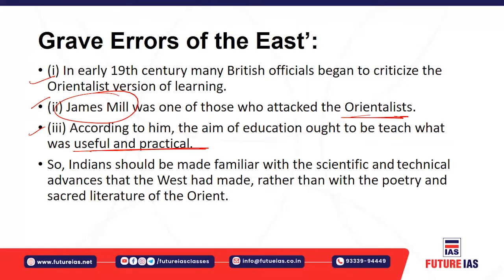James Mill argued that the shift should be from the traditional towards the scientific and technical. The orientalist version was focused on the inner world, not outward, and was not based on scientific and technically advanced learning — it involved traditional aspects. The British gave more emphasis on scientific and technical learning rather than just focusing on poetry and sacred literature in the orientalist tradition.